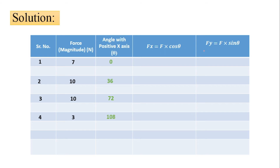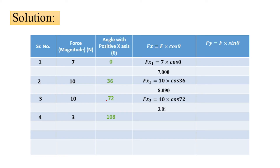Write all forces and angles one through four. Find Fx and Fy, where Fx equals F cos theta and Fy equals F sin theta. The Fx values are: 7 cos 0°, then 10 cos 36°, then 10 cos 72°, and finally 3 cos 108°. In this simple way we calculate the Fx component of all forces.